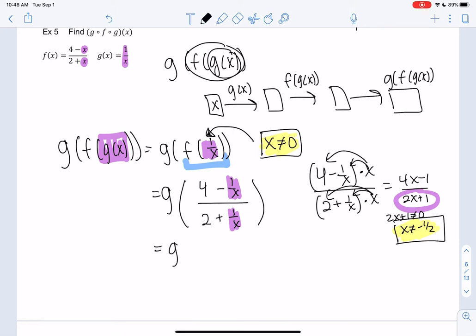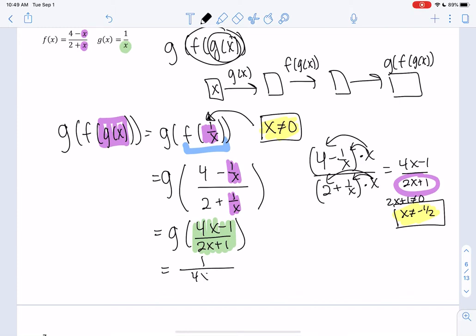So then we have g of this funky thing, 4x minus 1 over 2x plus 1. So we have one more input. So we plugged in 1 over x, we get this, and now we're going to plug this in back into g. So we're going to plug all of this in. Let's do green. This is my input, and I'm going to input it into 1 over x because that's the g function.